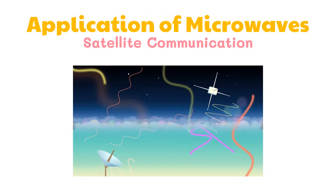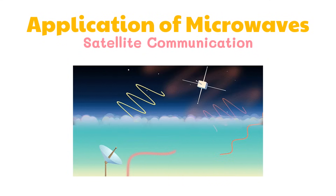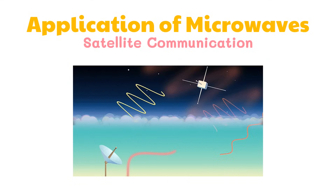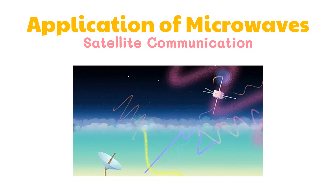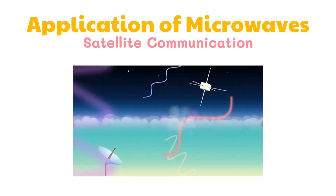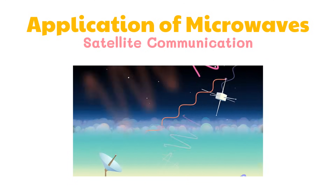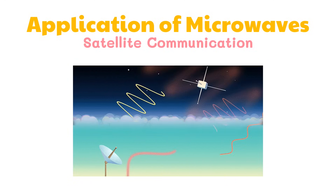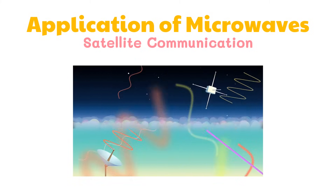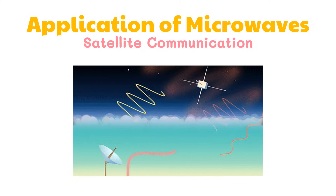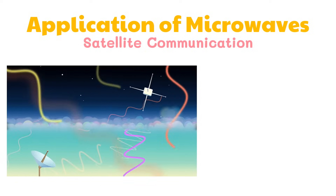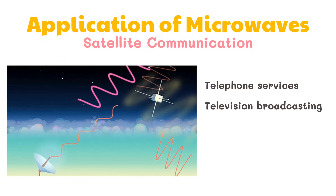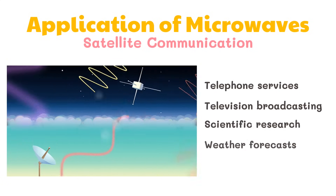Microwaves can penetrate the atmosphere of the Earth. This is the reason why they are used for satellite communications. Microwave signals are transmitted by an antenna to a satellite, which amplifies and retransmits the signal to an antenna in another part of the world. Most communication satellites are used to send and receive radio signals for telephone services, while the rest are for television broadcasting, scientific research, and weather forecast.